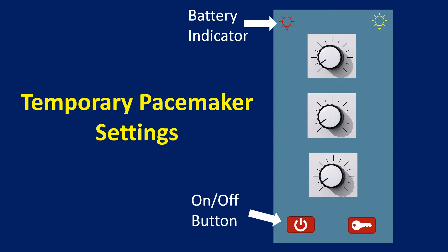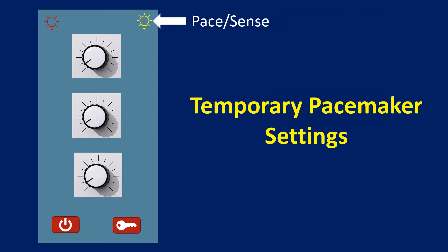We will start off by switching on the pacemaker using the on/off button. The display lights up in case of pacemakers with a display panel. In simpler devices, a power-on indicator will light up as well as a battery indicator. The pace/sense indicator will start blinking at the set pacing rate. If there is a spontaneous rhythm sensed, the color of the blinking indicator light will change to a different set color, usually green.